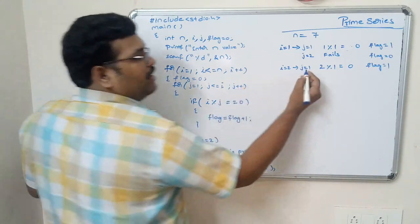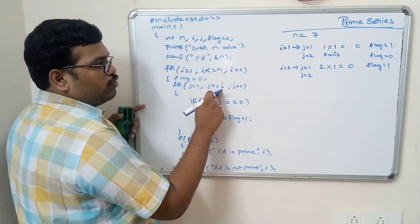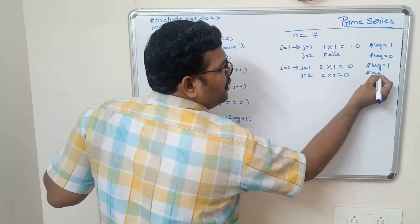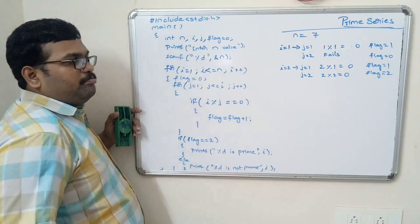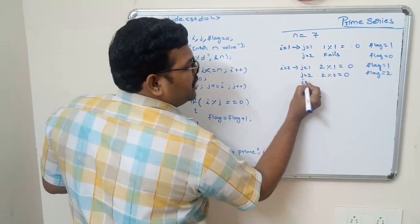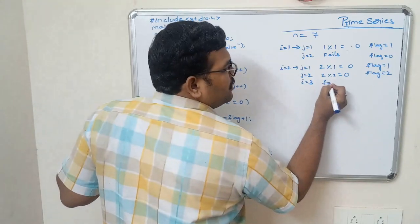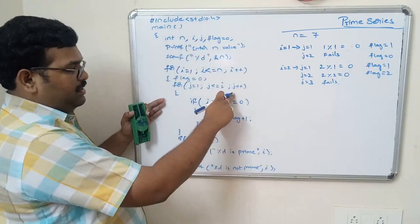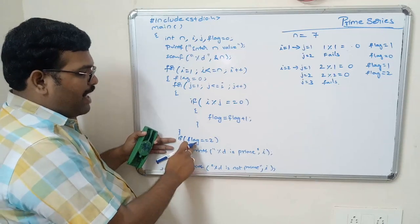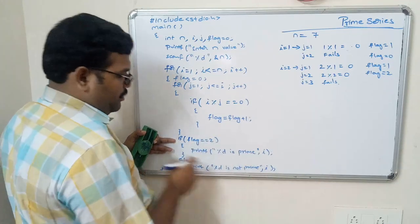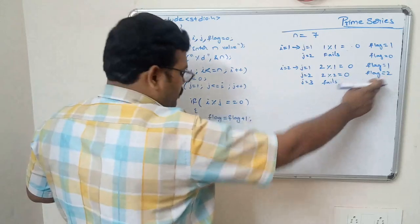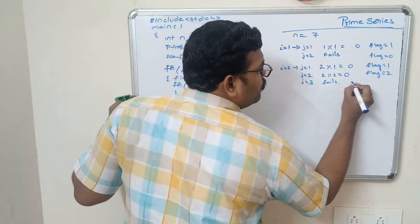Now j is incremented to 3, and 3 less than or equal to 2 fails, so control exits the inner loop. The condition flag equals 2 is checked — here flag is equal to 2, so 2 is printed as a prime. Then i is incremented, so i equals 3. Flag is initialized to 0 again.